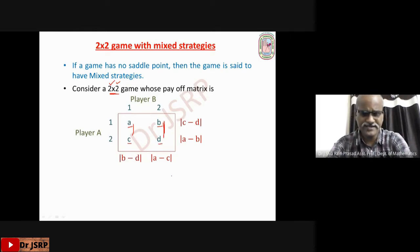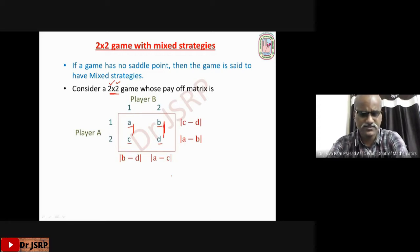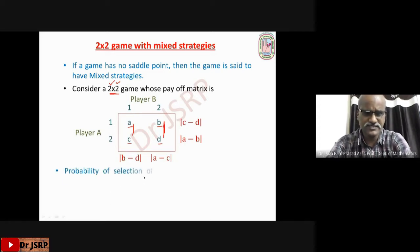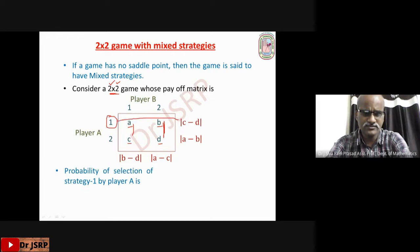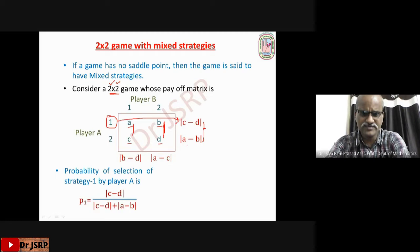After writing these values, we write the probabilities of selection of strategies for both players. The probability of selection of strategy 1 by player A — for this first strategy, the opposite row value is |C − D|. So P1 equals |C − D| divided by the sum of the two values: |C − D| plus |A − B|.